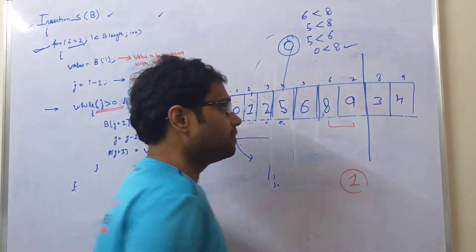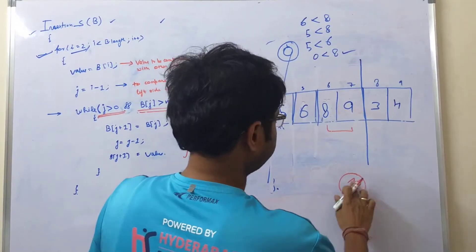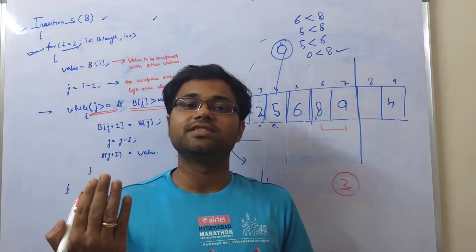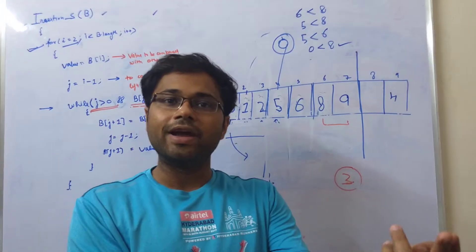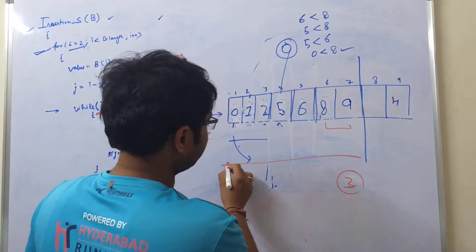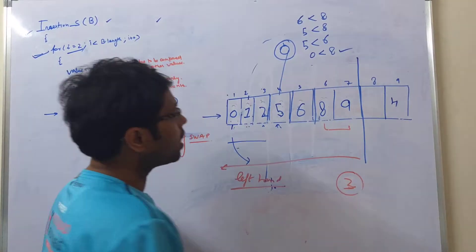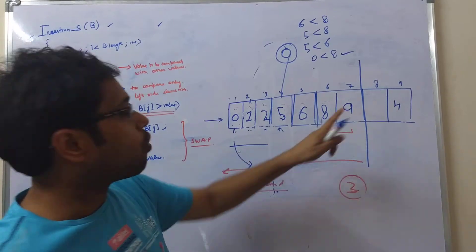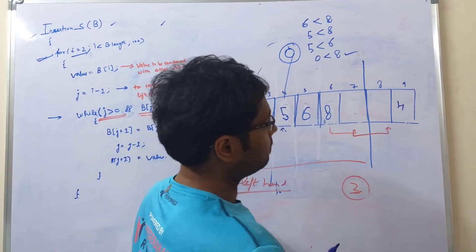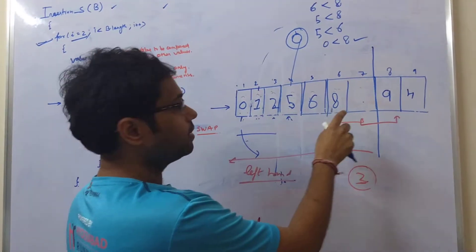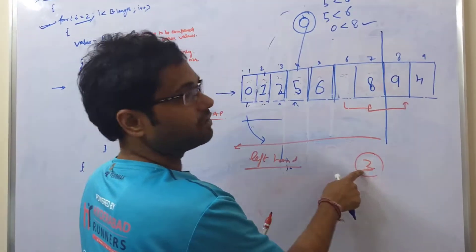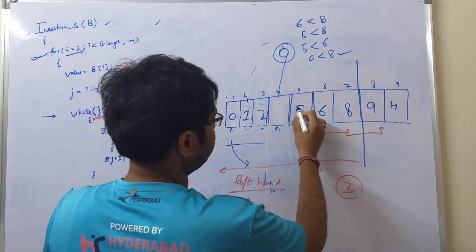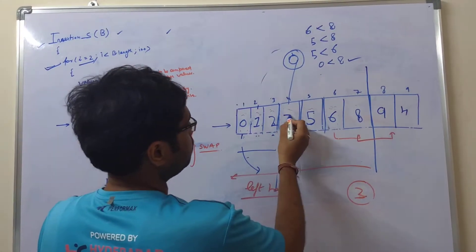All seven elements are now sorted. Now we compare 3. We take 3 out and compare it with all the cards in our left hand. Three is compared with 9 — it is less, so we put 9 here. Three is compared with 8 — less, so 8 moves. Three compared with 6 — less, so 6 shifts. Three compared with 5 — also less, so 5 shifts. Then 2 is compared with 3 — 3 is greater, so we place 3 here.